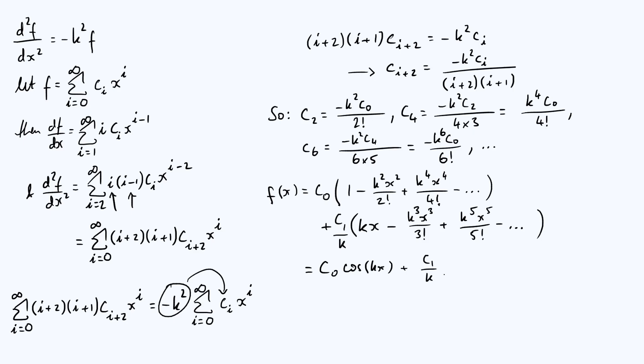So I can write plus c_1 over k times sine of kx, and it looks a little bit strange to have this divided by k here. Remember that k and c_1 are just constants anyway, so that we could just combine them into a single constant to make it look a little bit nicer. Let's relabel c_0 as just a, so you get a cos of kx, and let's relabel c_1 over k as just some new constant b, so a cos of kx plus b sine of kx. So we were indeed able to recover the well-known solution to the SHM equation using polynomials.